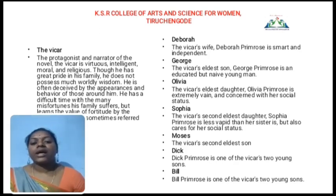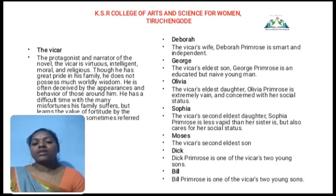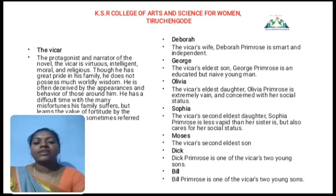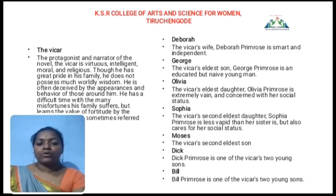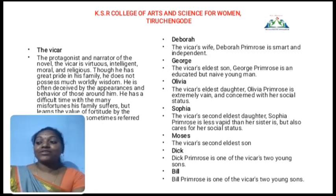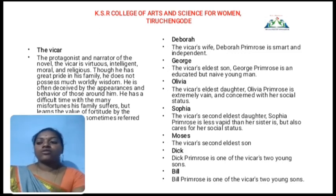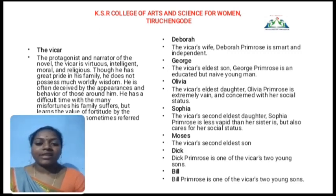Just conveying the antagonist of this novel. Every novel has a protagonist and an antagonist. The protagonist is the Vicar, whose real name is Dr. Primrose. The antagonist is a totally different character because he is a very selfish person. Squire Thornhill is the main villain of this novel — a very selfish person.